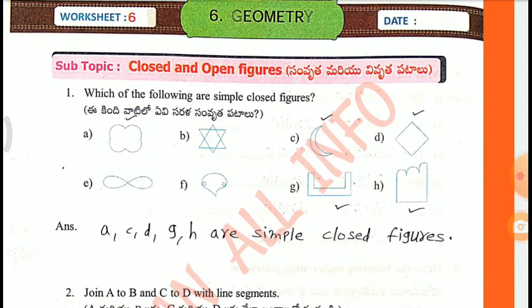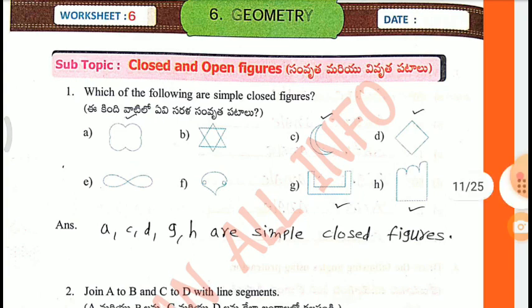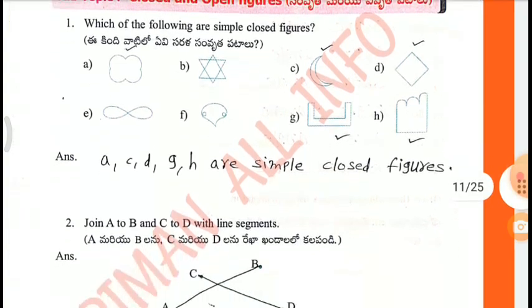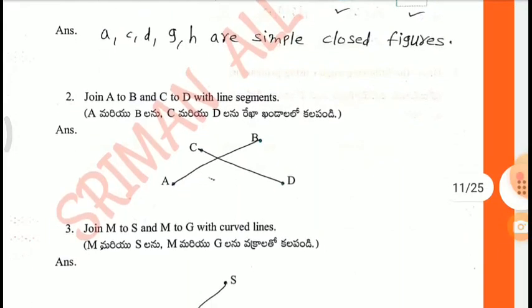Worksheet 6, Subtopic: Closed and Open Figures. First one: Which of the following are simple closed figures? A, C, D, G, H are simple closed figures.